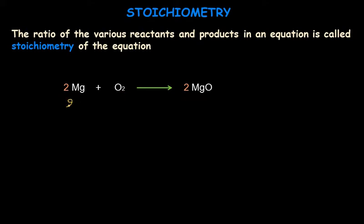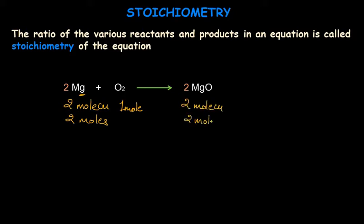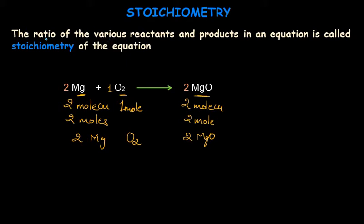This means that 2 molecules or 2 moles of magnesium reacts with 1 molecule or 1 mole of oxygen to form 2 molecules of the product, magnesium oxide. The ratio of the reactants magnesium and oxygen is 2:1, which shows that we need twice the magnesium compared to oxygen to make twice the product. This ratio is what we mean by stoichiometry.